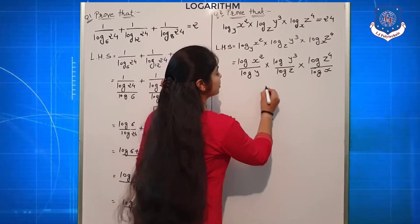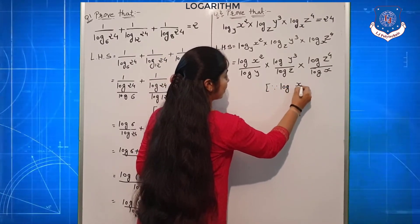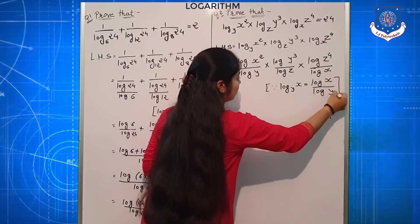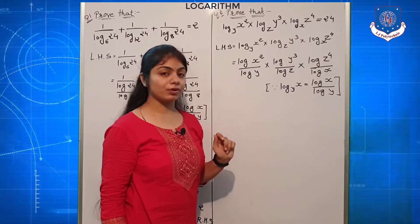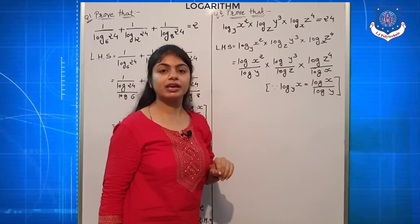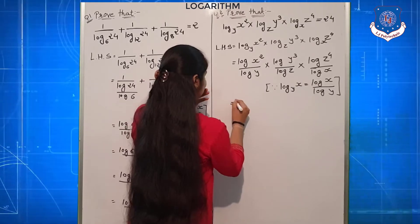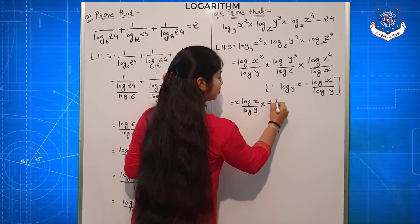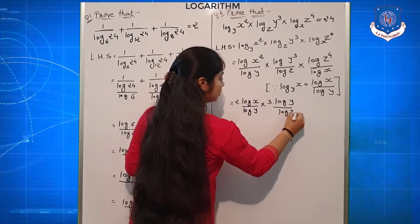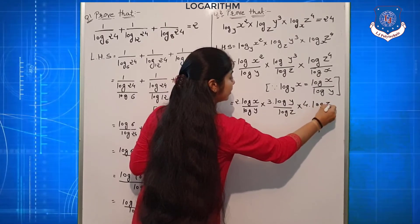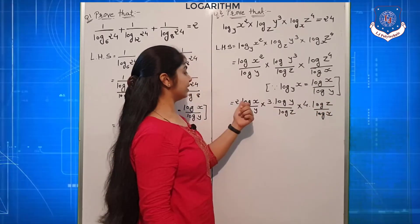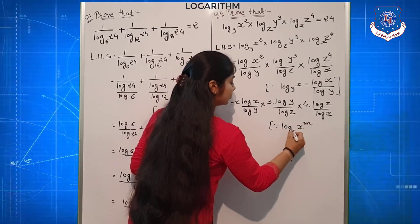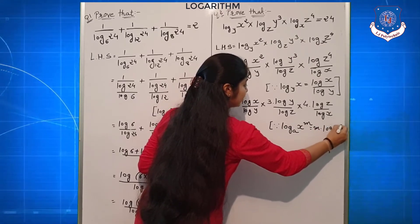We used the fourth fundamental law — change the base — where log x to the base y equals log x upon log y. Next, we apply the power law, the third fundamental law: all the powers come out as multipliers. So we write: 2 × log x upon log y, into 3 × log y upon log z, into 4 × log z upon log x. The reason: log(x^m) to the base a equals m × log x to the base a.